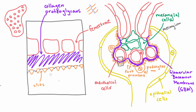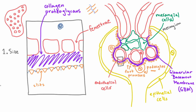What you really need to understand is how these three layers prevent a protein from being filtered. There are actually two ways this is done. The first is size — proteins might be too big to get through. These slits are probably the smallest thing that the protein would have to fit through.